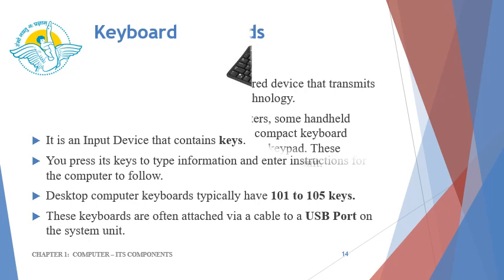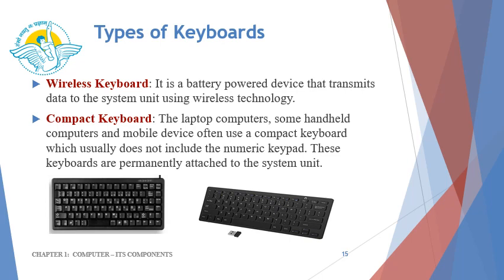Now let us see the different types of keyboards. The first one is wireless keyboard. It is a battery powered device that transmits data to the system unit using wireless technology. The wireless keyboard is connected to the system via a Bluetooth receiver which gets plugged into the USB port. The next type is compact keyboard. Laptop computers, some handheld computers, and mobile devices often use a compact keyboard, which usually does not include the numeric keypad. These keyboards are permanently attached to the system unit.